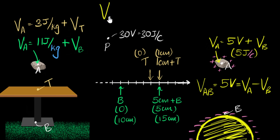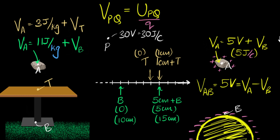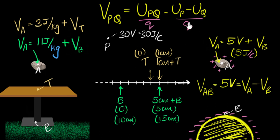Whether you call it potential at a point or potential difference between two points, it's really the same thing. So now we can update our definition of potential. The potential at point P with respect to some reference point Q is the potential energy that a charge would have at point P compared to at point Q, per coulomb. That is: potential energy at P minus potential energy at Q, divided by the charge. You're calculating how much more potential energy it has compared to point Q per unit charge. For electric charges, this second point is most often taken to be infinity.